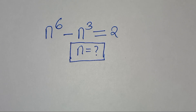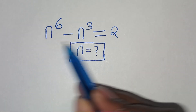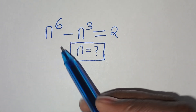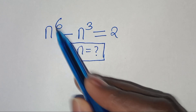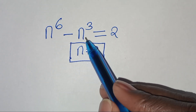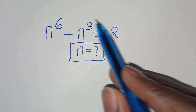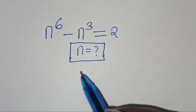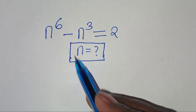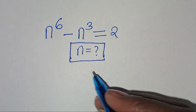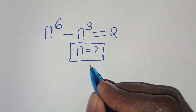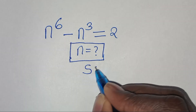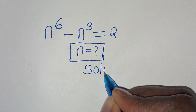Hello everyone, you are welcome to solve this nice algebra problem which is n to the power of 6 minus n to the power of 3. This is equal to 2. So what are the values of n? Let's provide a solution from here.